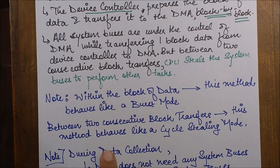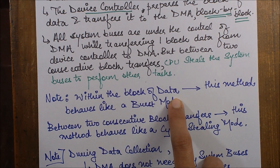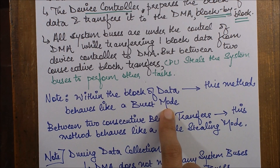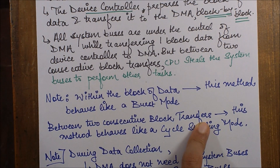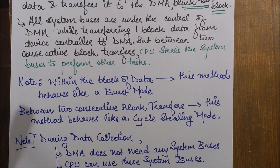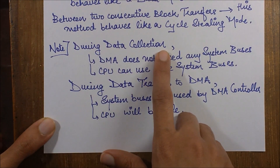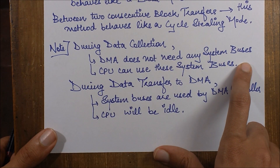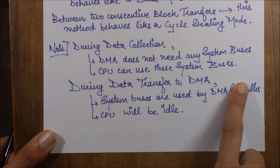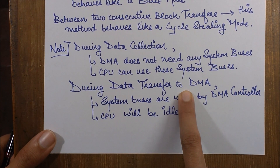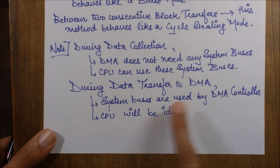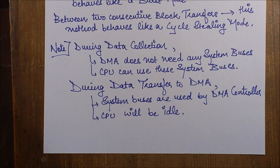There are one or two important notes here. Within the block of data — while the device controller is preparing that block — this method behaves like burst mode. Between two consecutive block transfers, this method behaves like cycle stealing mode. During data collection, the DMA does not need any system buses since data is being collected between the device controller and the device, so the CPU can use the system buses. During data transfer from the device controller to the DMA, system buses are used by the DMA controller and the CPU will be idle.